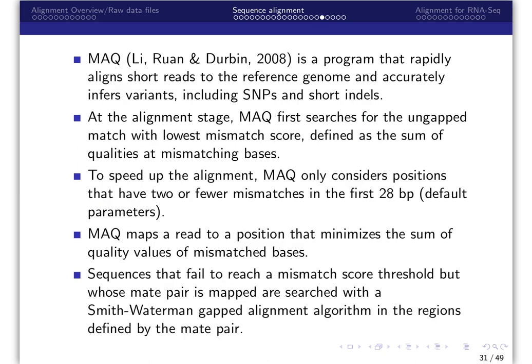MAC is a program that rapidly aligns short reads to the reference genome and accurately infers variants, including SNPs and short indels. MAC uses an algorithm similar to ELAND to find the best hit. At the alignment stage, MAC first searches for the ungapped match with the lowest mismatch score, defined as the sum of qualities at mismatching bases.